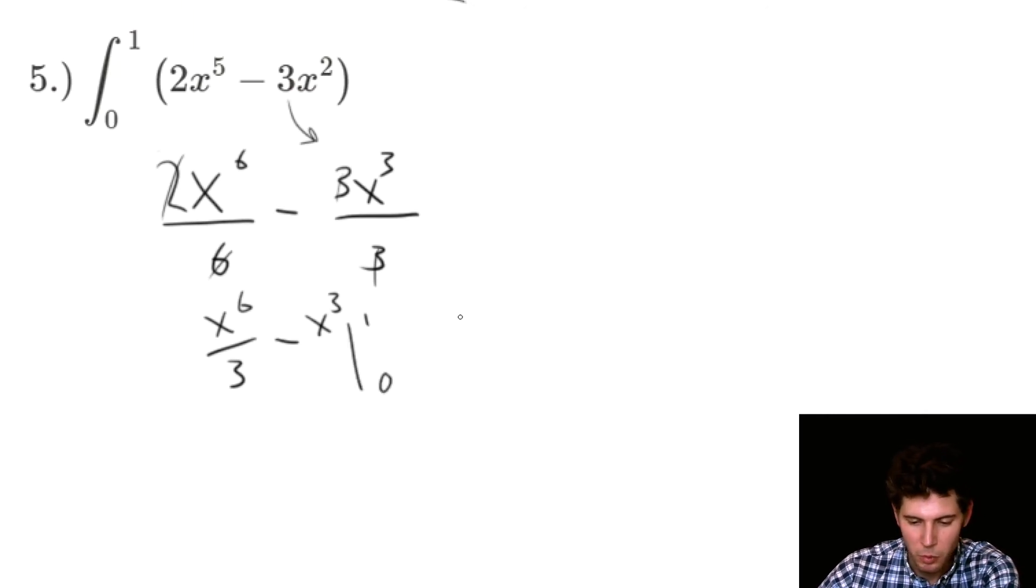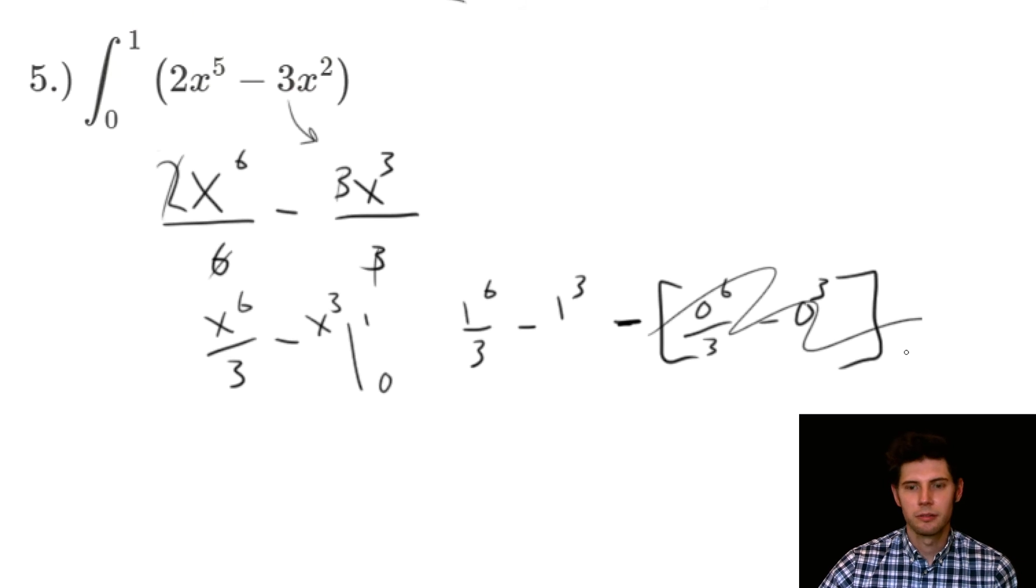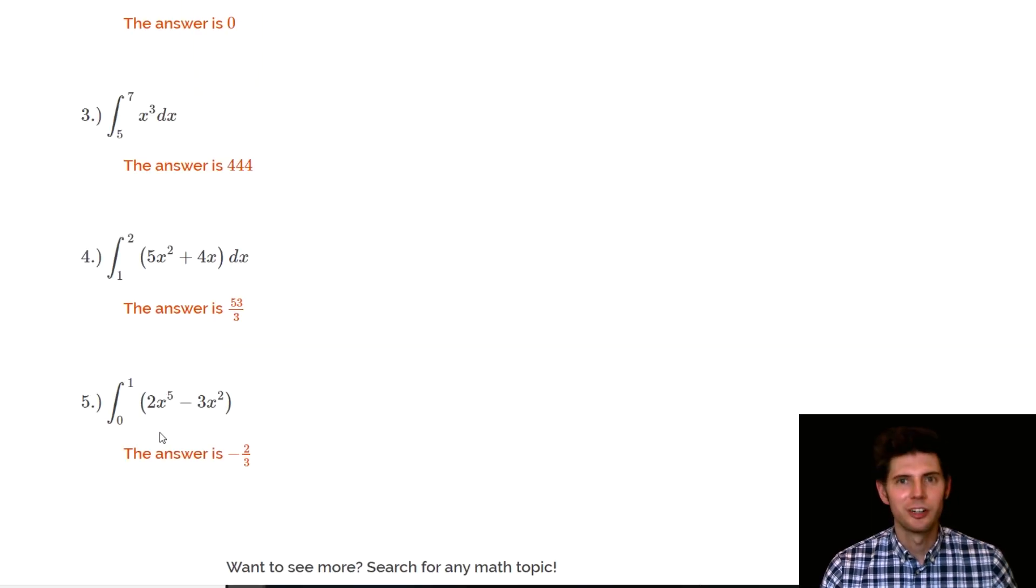So we plug in one, we get one to the sixth over three, minus one cubed, minus zero to the sixth over three, minus zero cubed. So the zeros go away. They don't have any value. And so this would be one third minus one, because one cubed is one, and we get negative two thirds. And hopefully that's the answer. Negative two thirds.